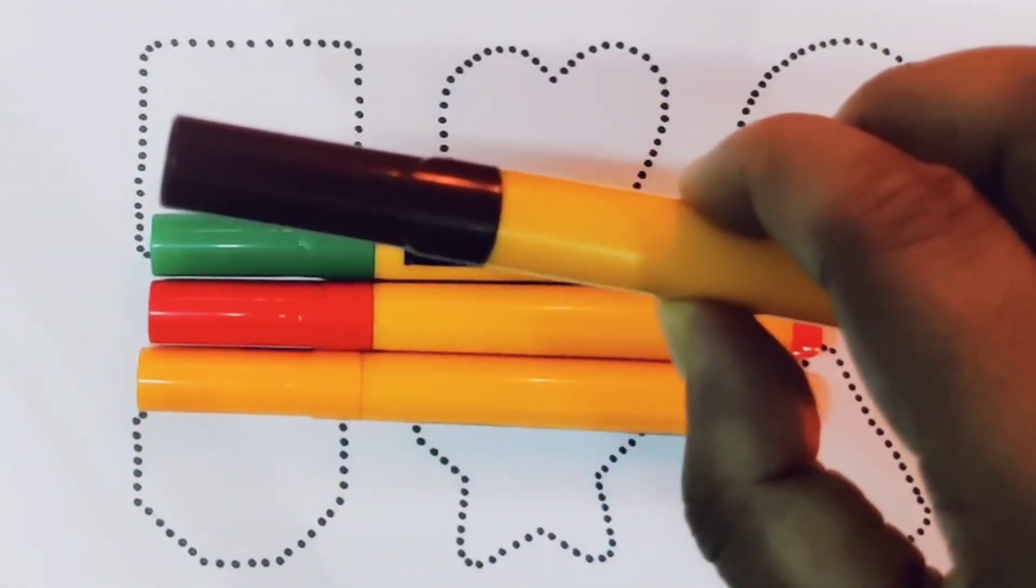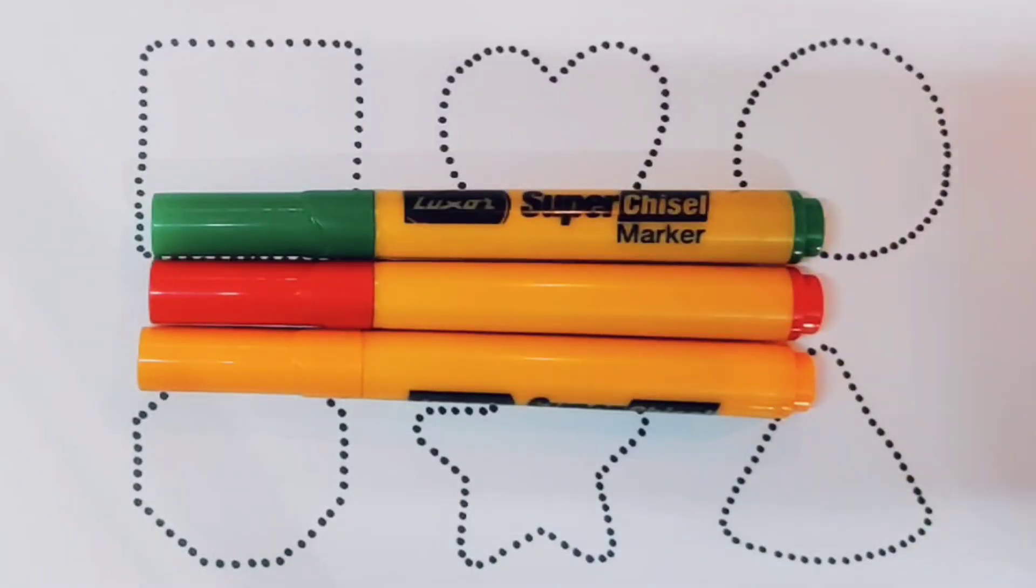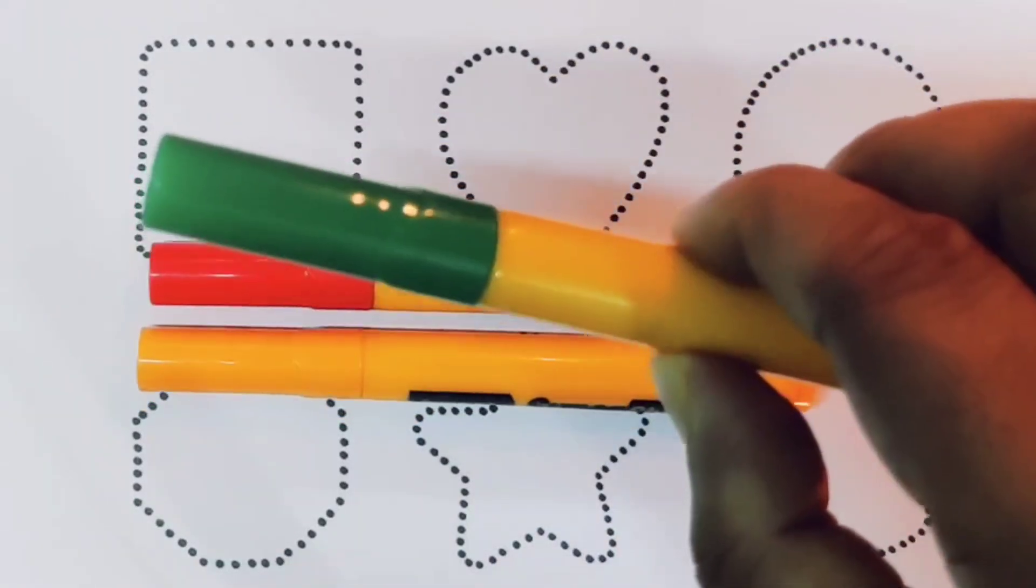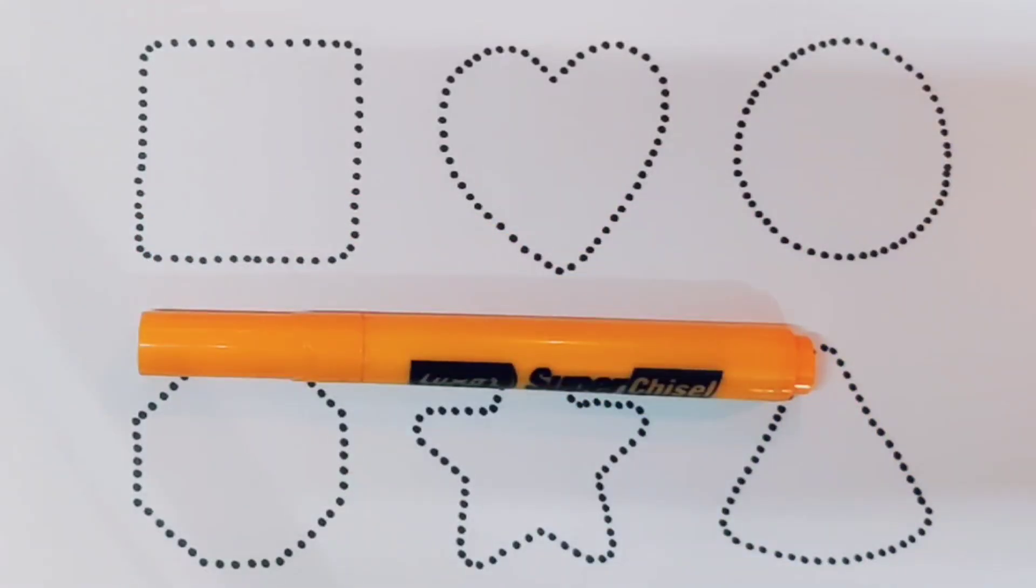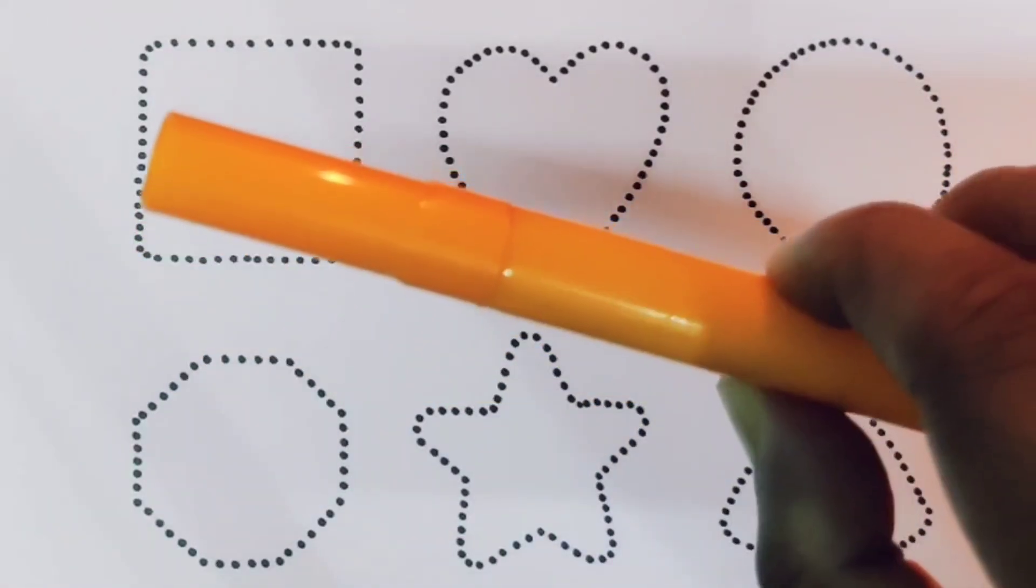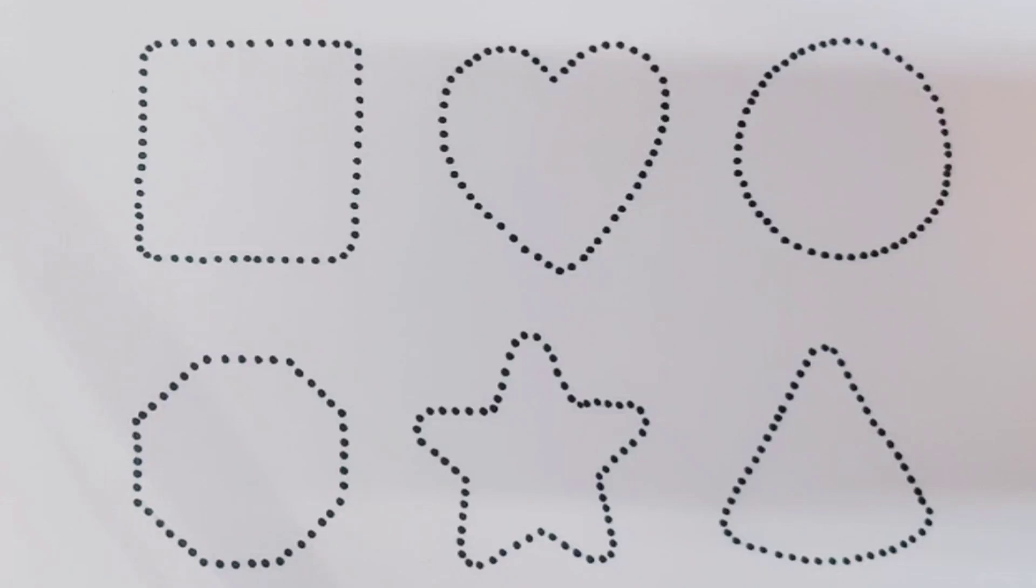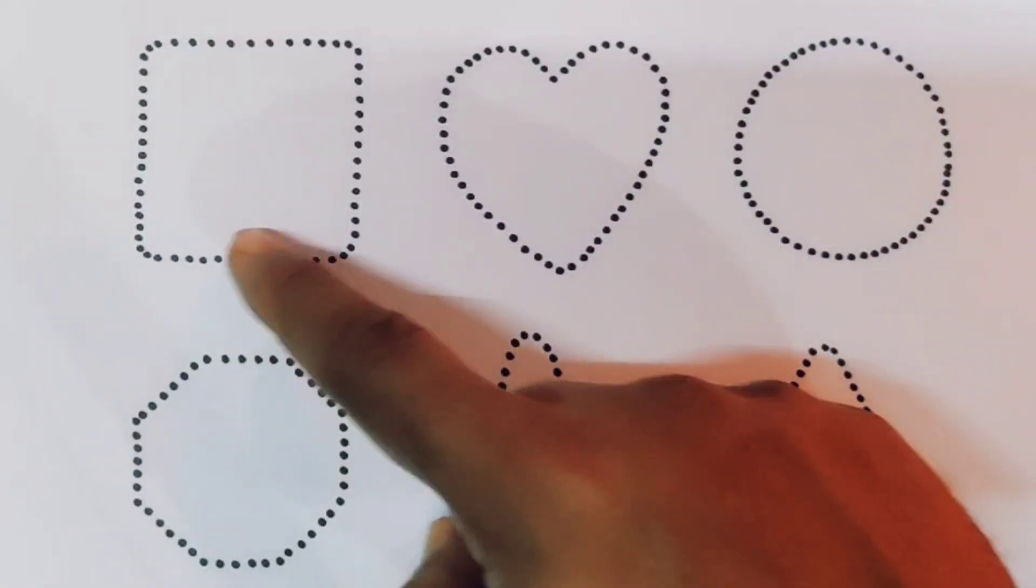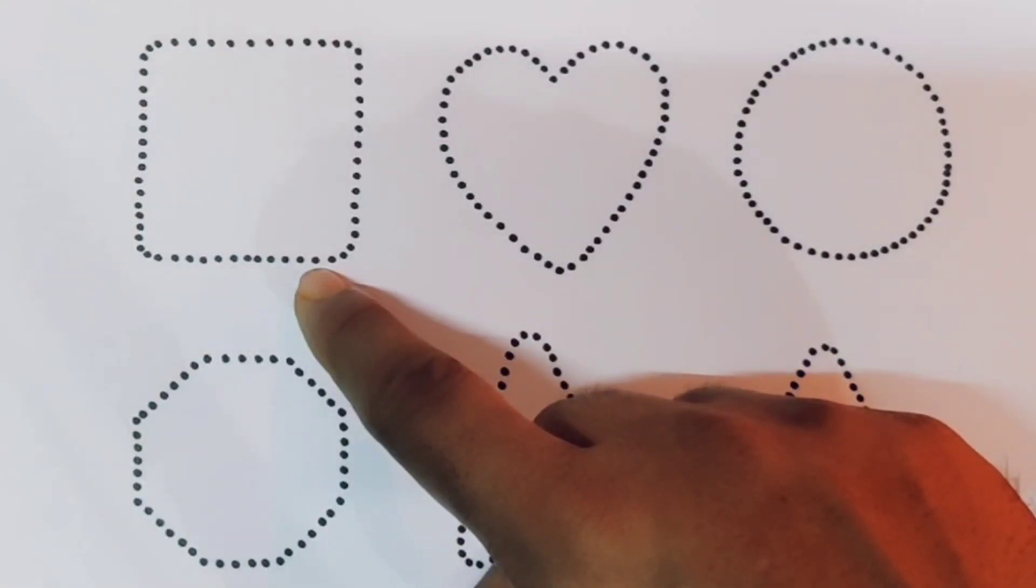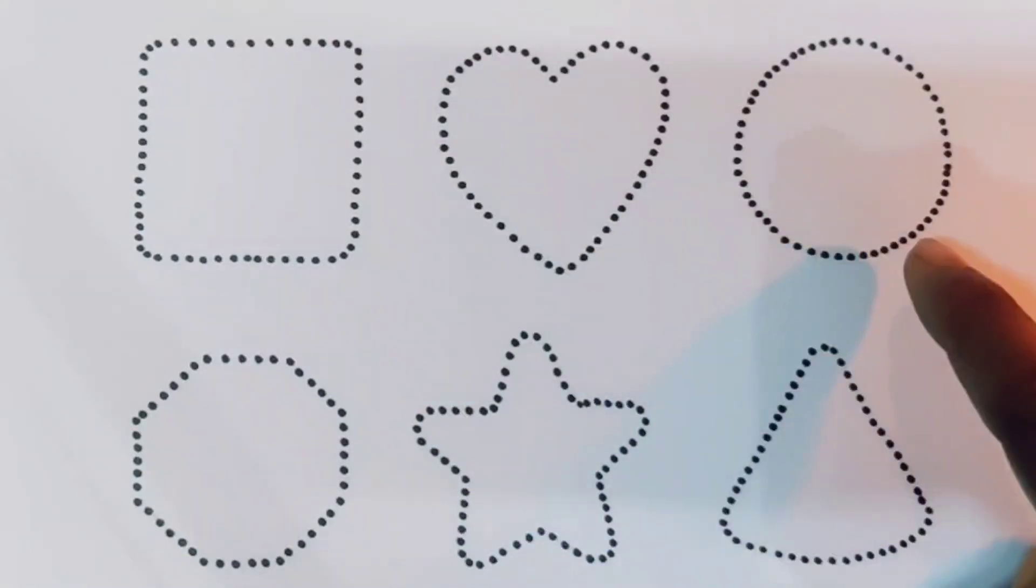Light green color, red color, orange color, and black color. Now let's draw the 2D shapes: square, heart, circle.